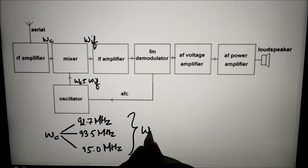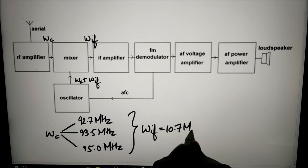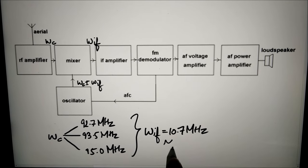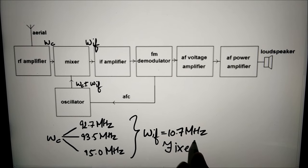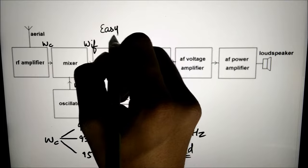The IF signal is fed into the IF amplifier. The advantage of the IF amplifier is that its frequency and bandwidth are fixed no matter what the frequency of the incoming signal is. This makes the design and operation of the amplifier much simpler.